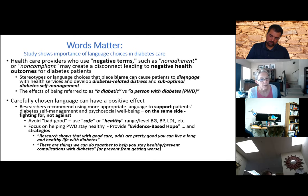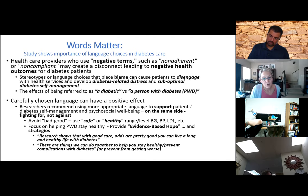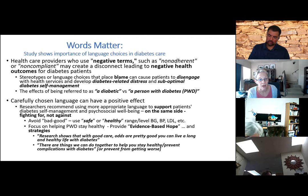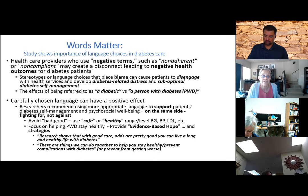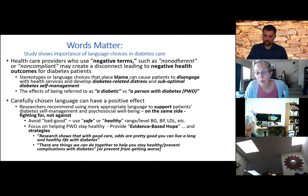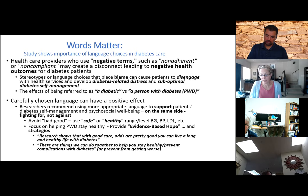Avoid saying 'you better be careful or you'll end up with an amputation' — instead, 'how can we avoid an amputation? Let me help you. Research shows that with good care, odds are pretty good you can live a long and healthy life with diabetes. There are things we can do together to help you stay healthy and prevent complications.' Or if they already have some neuropathy or albumin in their urine: 'we can keep this from getting worse — there are things we can do to help.'